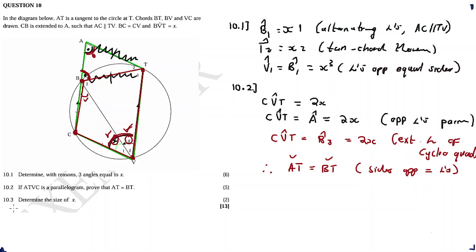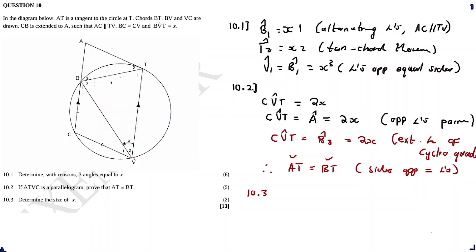Question 10.3, the last one: determine the size of x. Looking at triangle ATB — remember T2 is x, angle A is 2x, and angle B3 is 2x.